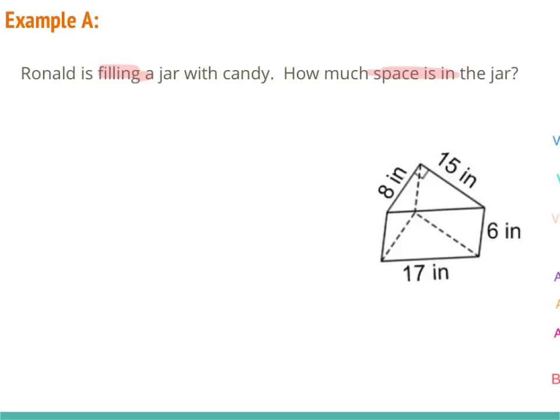Now we need to determine what shape we have. We can see that we have a triangle on top and a triangle on the bottom, so we know this is going to be a prism. Anytime you have a flat surface on the top or bottom, that's a prism. When all the sides come to a point at the top, that's a pyramid. Since our shape on top is a triangle, that makes it a triangular prism.